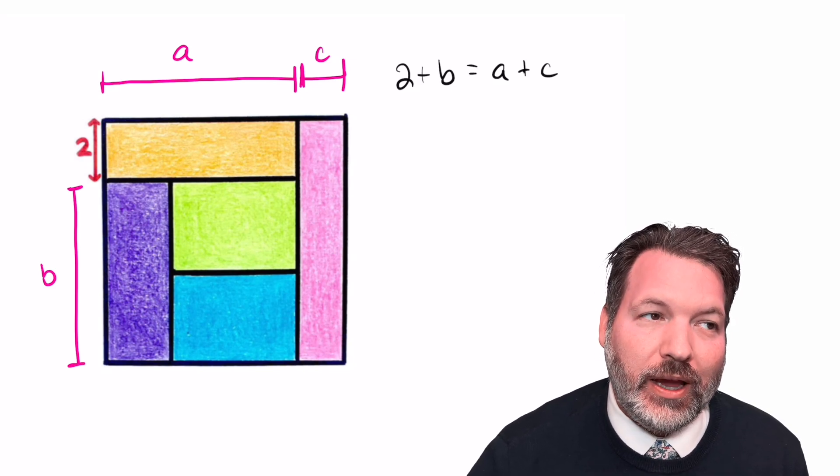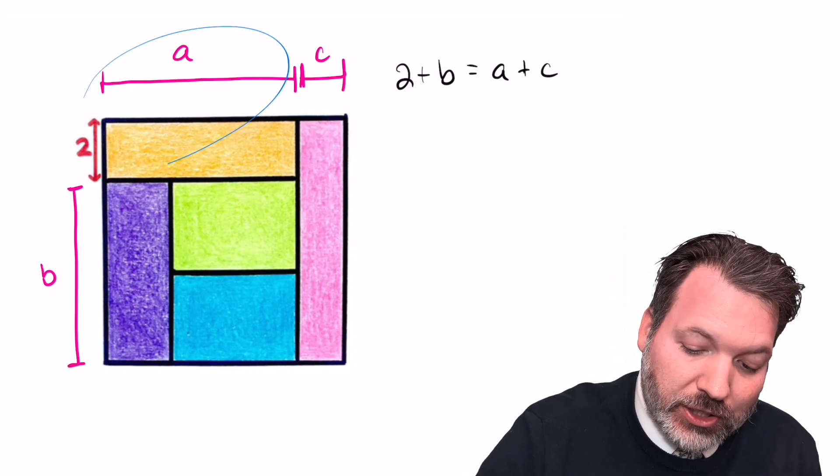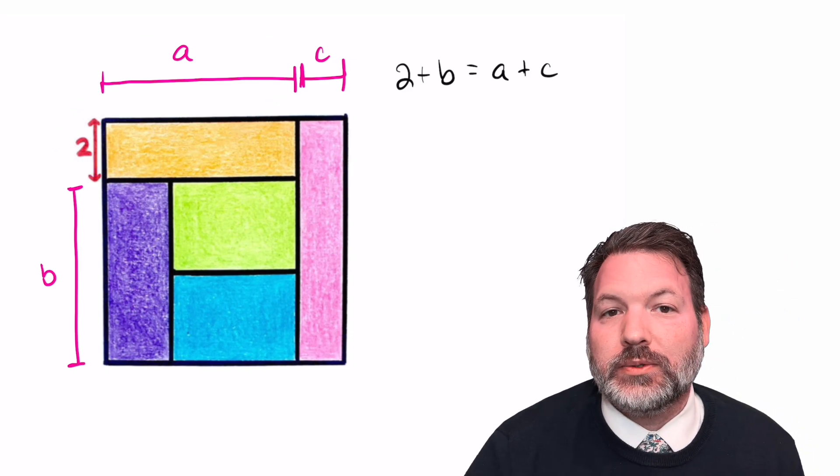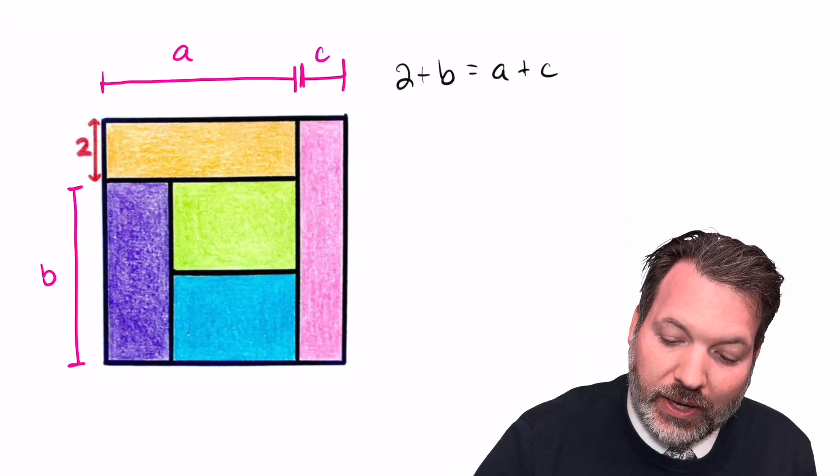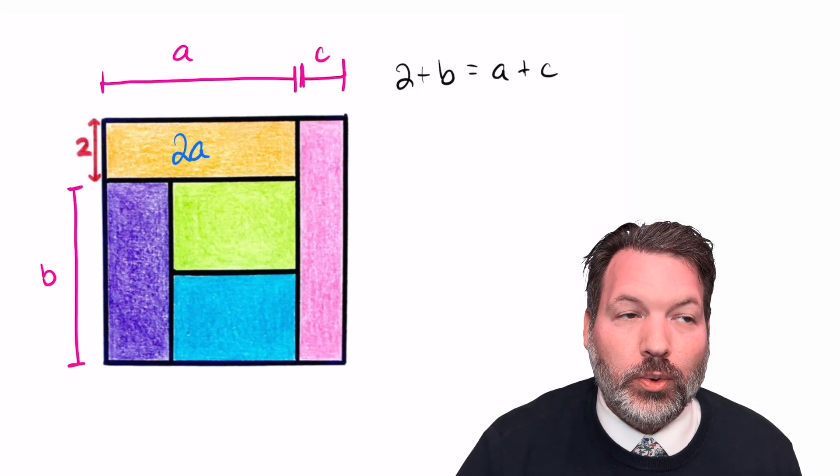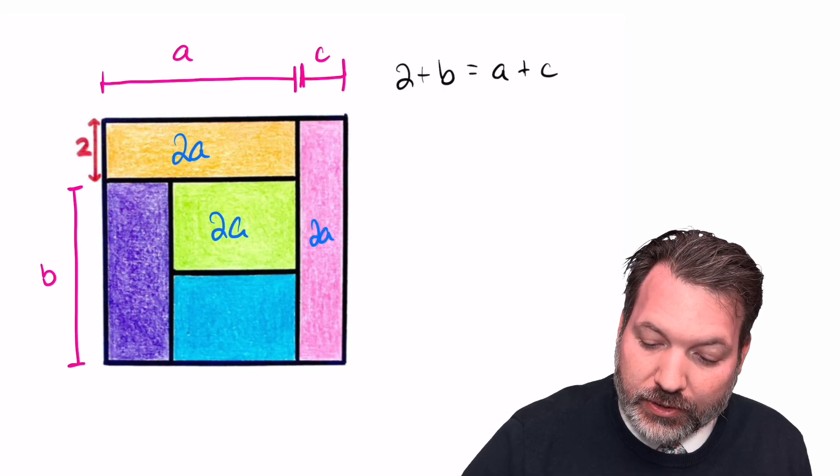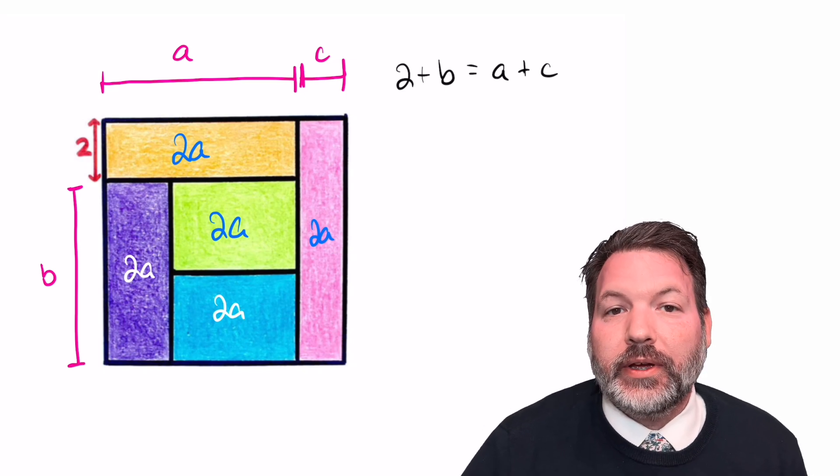So let's compute that area. We do actually know the dimensions completely of one of those five rectangles. This rectangle in the upper left-hand corner is a 2 by a rectangle, and so its area must be length times width, 2 times a equals 2a. Once we know that one, we can label all of these areas as 2a, and so we've got five different rectangles all with that area 2a.